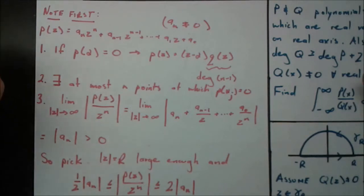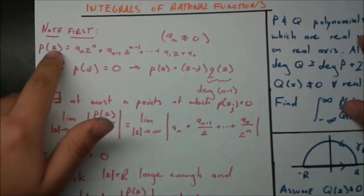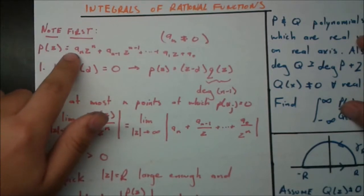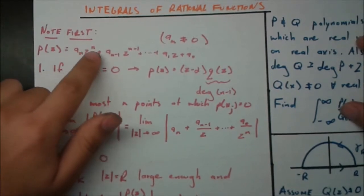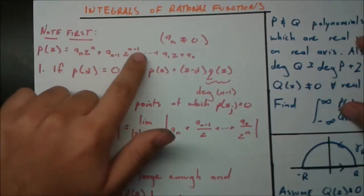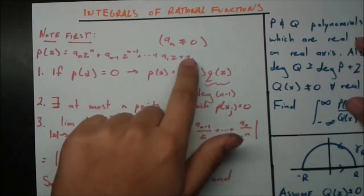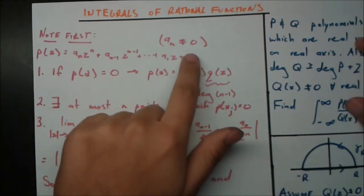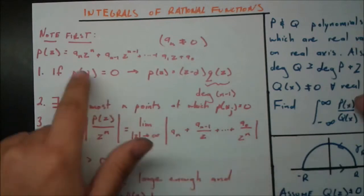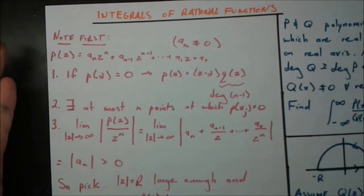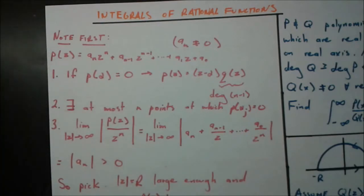We're going to talk about polynomials. Here's a polynomial of complex function z: P(z) = a_n z^n + a_{n-1} z^{n-1} + ... + a_0, where the constant term a_0 has no z because it's z to the power of 0. Note that a_n is not equal to 0 — since this is a polynomial, at least one coefficient must be nonzero so the polynomial isn't just equal to 0.